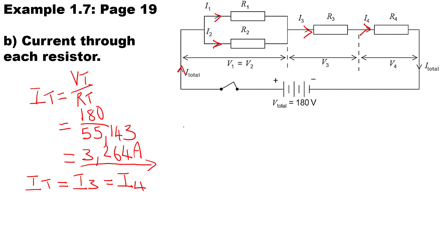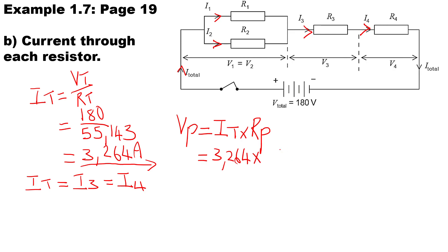To calculate I1 and I2, we first need to determine the volt drop across the parallel branch. Remember, voltage stays the same in parallel. To calculate the volt drop across the parallel branch, we say I total times the resistance of the parallel branch. The total current is 3.264, and to calculate the resistance of the parallel branch, we use 1 over R1 plus 1 over R2, all to the power of minus 1.